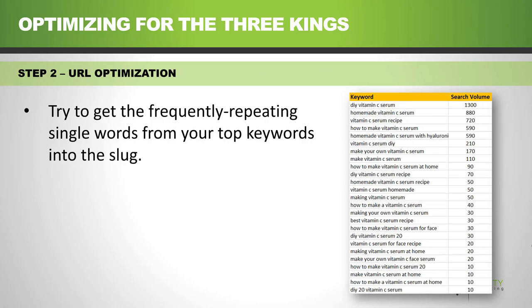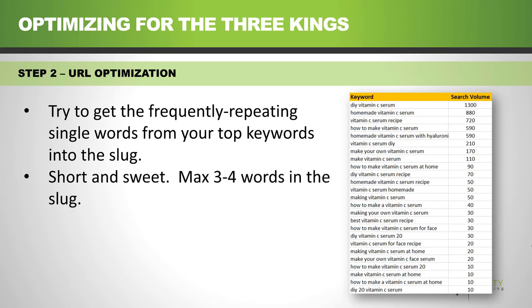These are the rules: try to get the frequently repeated single words into the slug. The slug is the part of the URL that comes after the forward slash after the domain name. So in this example, the words DIY, vitamin, C, and serum are coming up a lot in this list, and these words are also present in the top keyword with the most search volume.